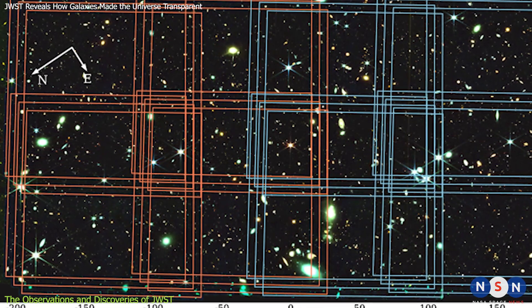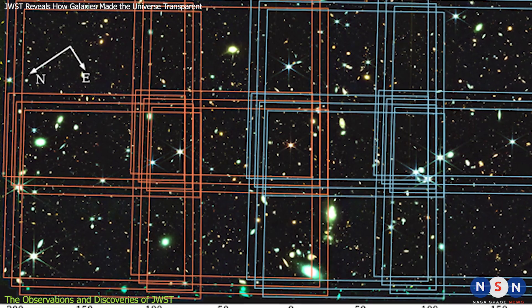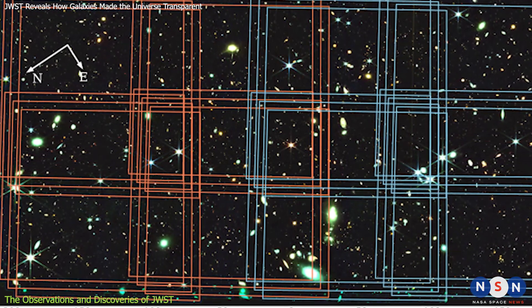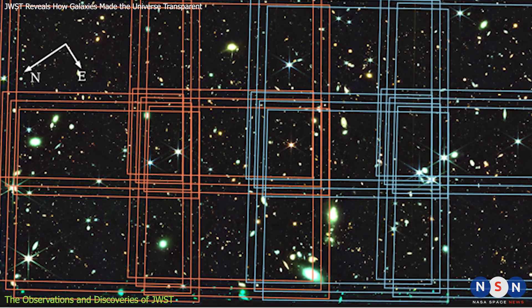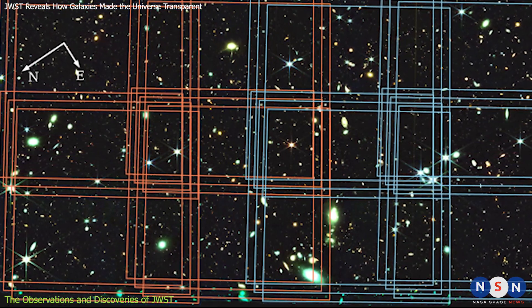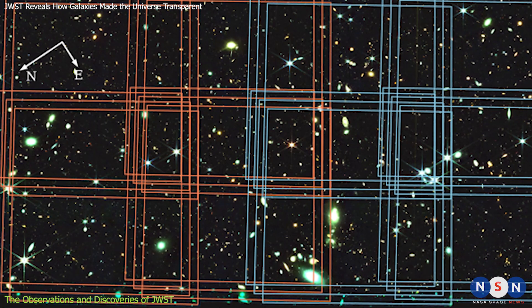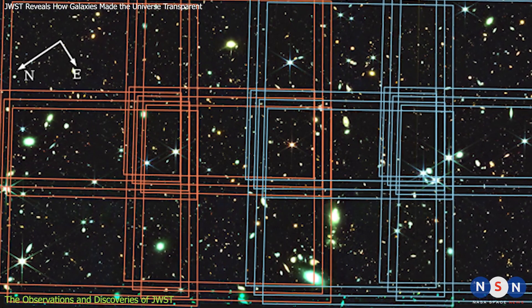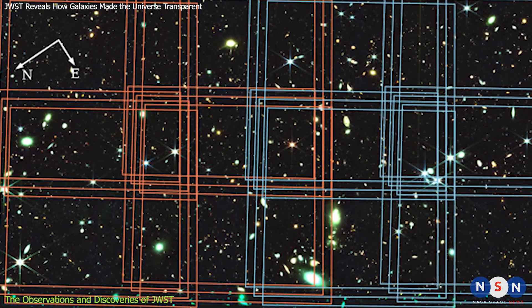They measured their Lyman alpha emission and compared it with their brightness in other wavelengths. They found that most of these galaxies had very low escape fractions of ionizing photons, meaning that they were surrounded by thick shells of neutral gas that blocked most of their ionizing light.